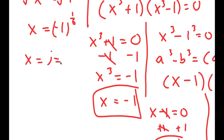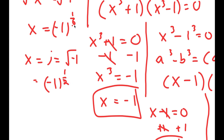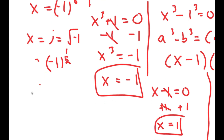We know that i is equal to the square root of negative 1, which is equal to negative 1 to the power of 1 half. So negative 1 to the power of 1 over 6 can be rewritten by decomposing the exponent.